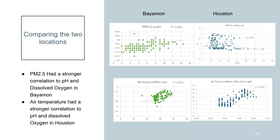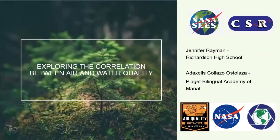Looking at the two sites, PM2.5 seemed to have a stronger correlation to pH and dissolved oxygen in Puerto Rico. However, in Houston, it was the air temperature that seemed to have a stronger correlation.